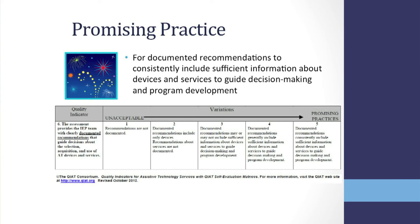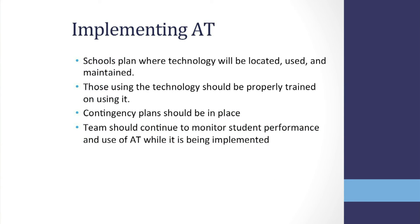Promising practice is for documented recommendations to consistently include sufficient information about devices and services to guide decision making and program development. When implementing assistive technology into the environments that the student is required to perform, schools should plan where technology should be located, used, and maintained. Those who will be using the technology should be properly trained, and contingency plans should be in place to ensure that the student has access to the AT tool in the event that the primary AT malfunctions. The team should continue to monitor student performance and use of AT while it is being implemented. See the AT TA document for additional resources on implementation as well.